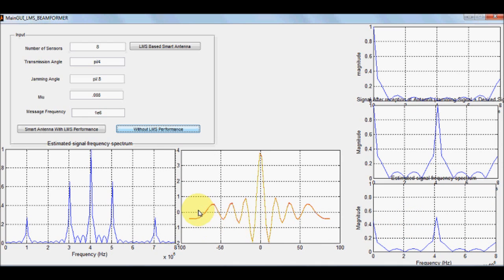This is the performance of the system without LMS. As you can see that it has got quite significant side lobes. It has got a main lobe that represents the gain on the transmitted signal but it still has got significant side lobes.